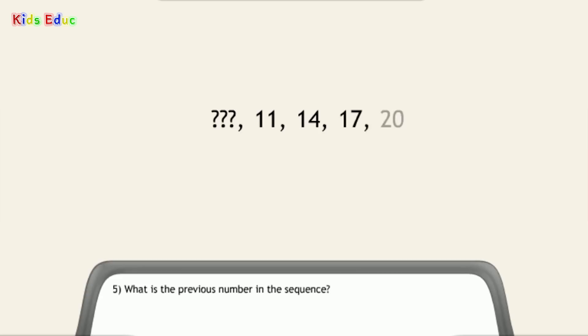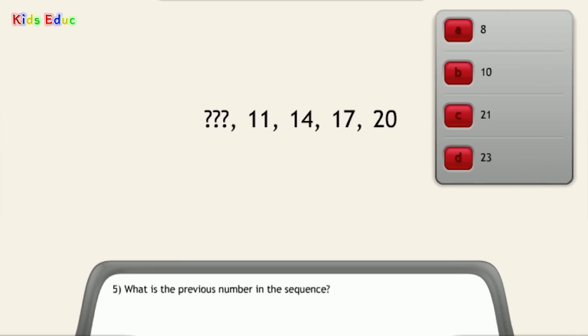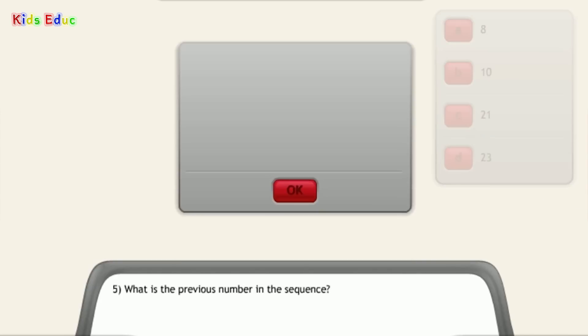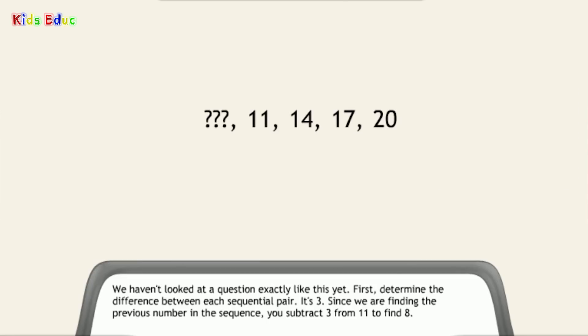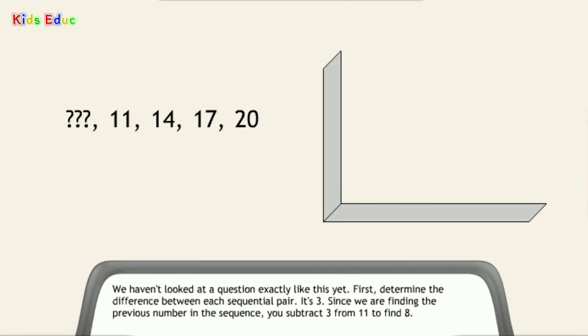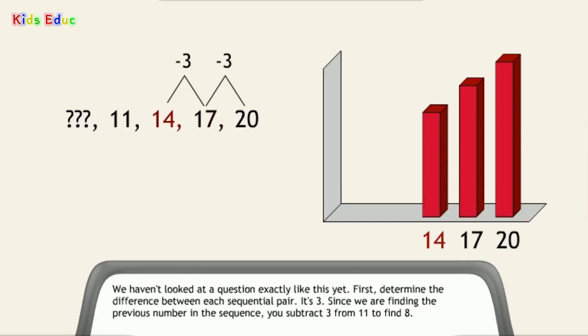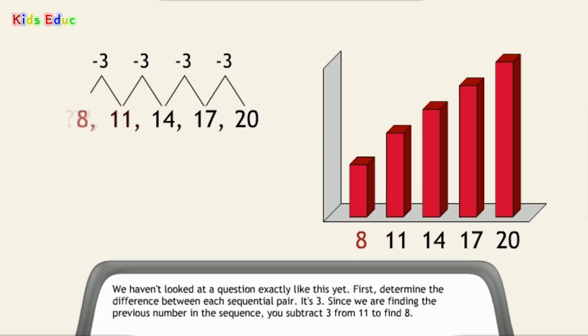Number 5. What is the previous number in the sequence? 8. That's correct. We haven't looked at a question exactly like this yet. First, determine the difference between each sequential pair. It's 3. Since we are finding the previous number in the sequence, you subtract 3 from 11 to find 8.